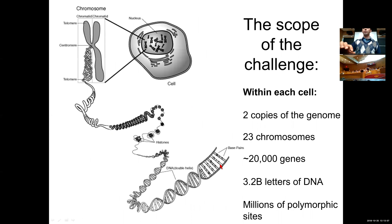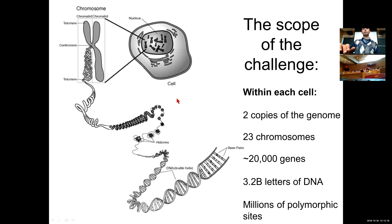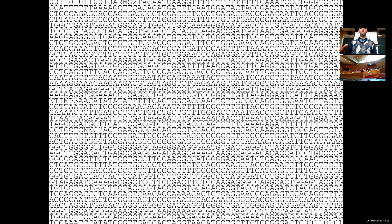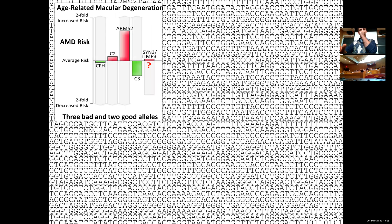Here's the scope of the challenge. Within every cell we have two copies of the genome, 23 chromosomes, 20,000 genes, 3.2 billion letters of DNA, and millions of polymorphic sites. So how do you find in this very large haystack the needles that are the genetic associations?